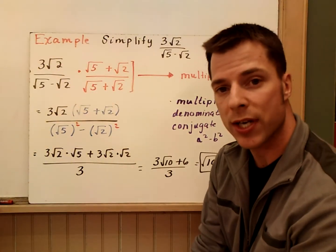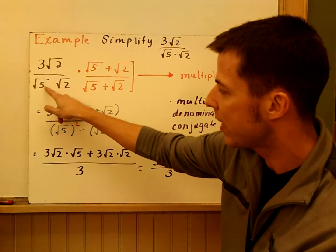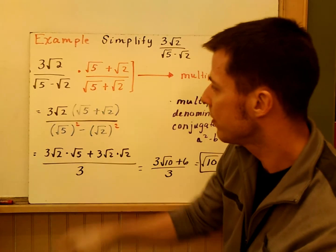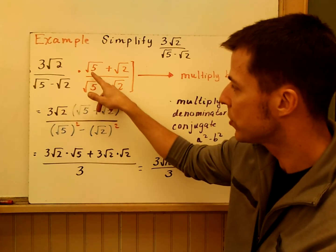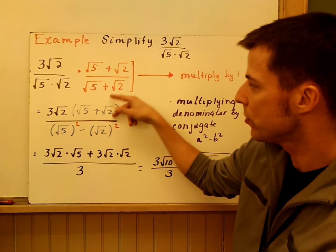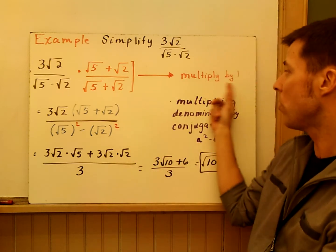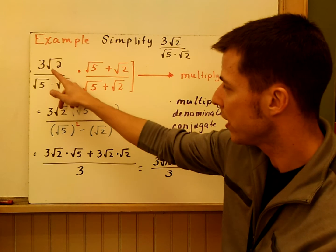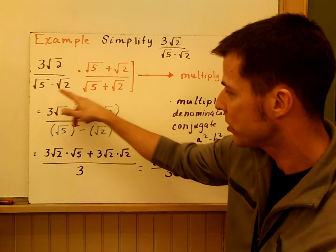Last example here is where we use conjugates. You have 3 root 2 divided by root 5 minus root 2. Can't combine these because they're different radicands. So I'm going to multiply the top and bottom by the conjugate of the denominator. So that becomes root 5 plus root 2 over root 5 plus root 2. So essentially, I'm multiplying by 1, right? Same thing divided by each other. That's just 1, really. So I haven't changed the problem. Now I combine like terms.